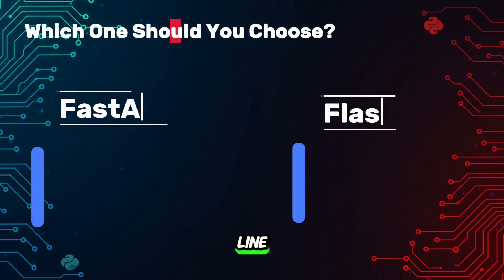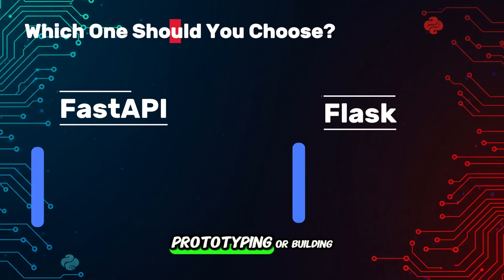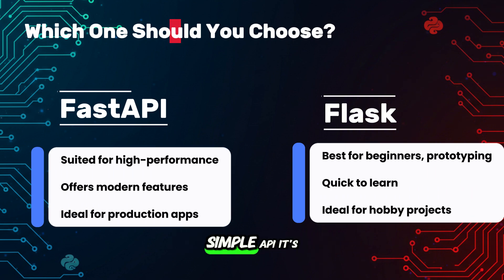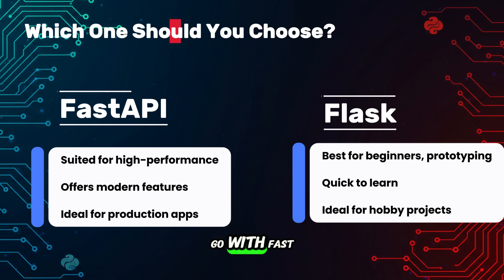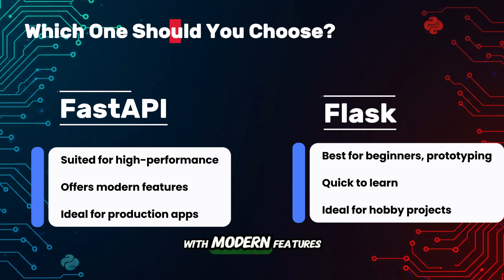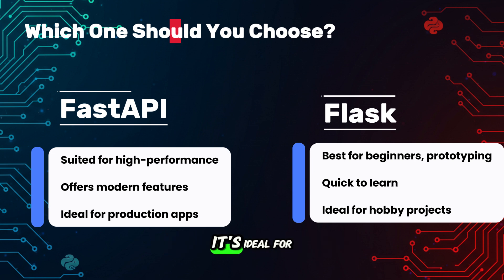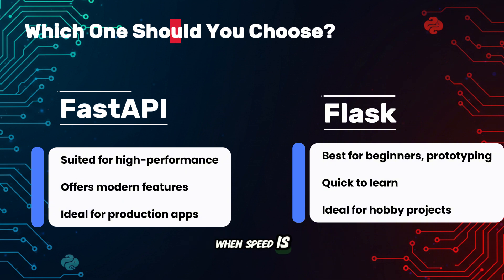Here's the bottom line. Pick Flask if you're a beginner, prototyping, or building a small, simple API. It's quick to learn, easy to set up, and perfect for hobby projects or microservices. Go with FastAPI if you need a high-performance, scalable API with modern features like data validation and automatic documentation. It's ideal for production apps or when speed is critical.